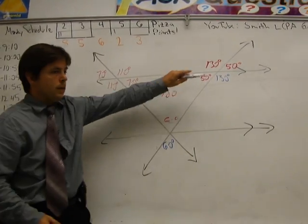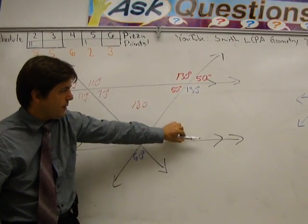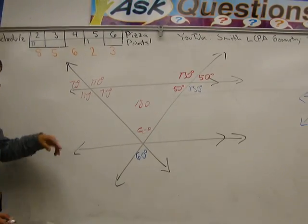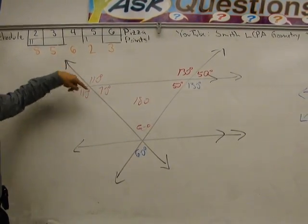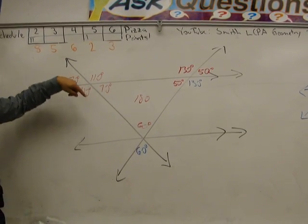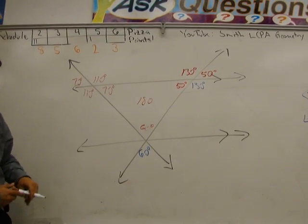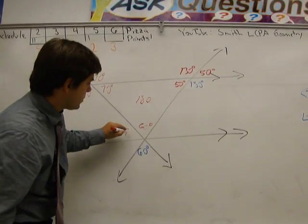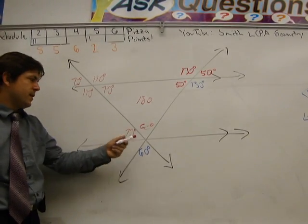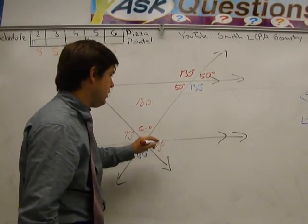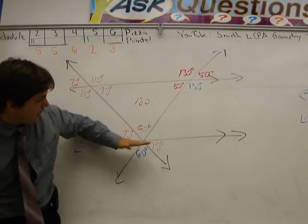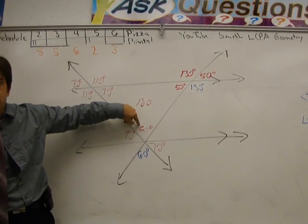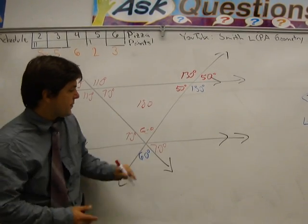So this line is parallel to this line. So I'm going to look for my corresponding angle. I've got this angle. This one here is a corresponding angle. They're in the same position in different intersections. Corresponding angles between parallel lines are congruent. So this one is 70. Once we've got that, this one's also 70 by vertical angles. And then we've got these three angles together forming a straight line. 70 plus 60 is 130. So this one that's left over is 50.